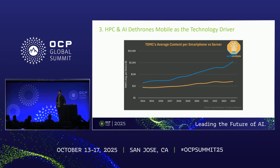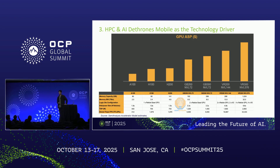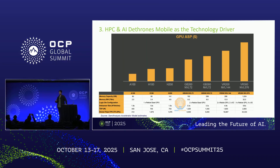You can see that as TSMC introduces new process technology, the average content of a TSMC-produced chip into a smartphone versus a server has really grown. We've also seen that the average selling price of a given GPU is significantly growing as we go from the Ampere generation to Hopper, Blackwell, and then in the future with Vera Rubin.